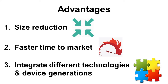What is the advantage of SIP? Number one: size reduction. If you use discrete packages, dies, and passive components, the system size will be much bigger than SIP. Number two: faster time to market. SOC needs around two years to develop, but SIP only needs around six months. Number three: it can integrate different technologies and device generations. SIP can integrate silicon dies, gallium nitride dies, and others as well.